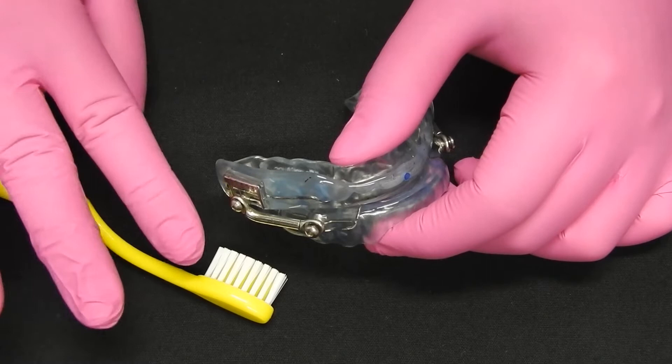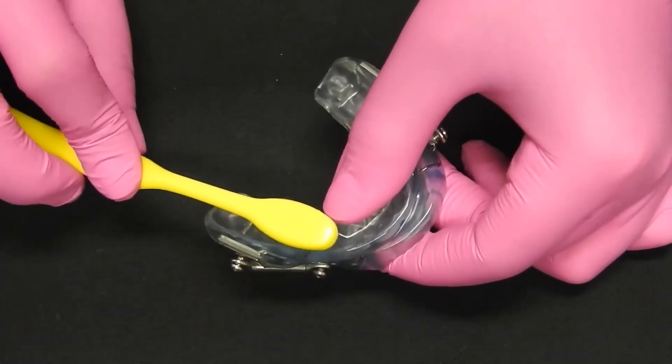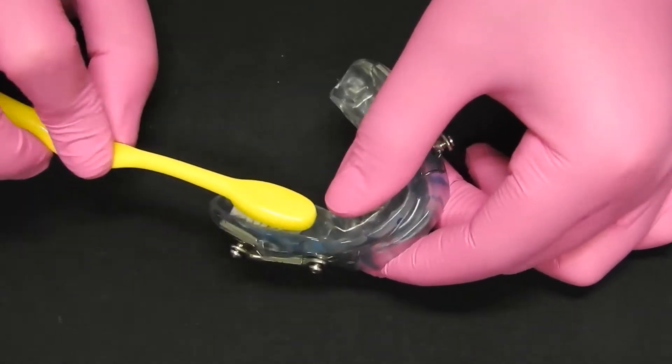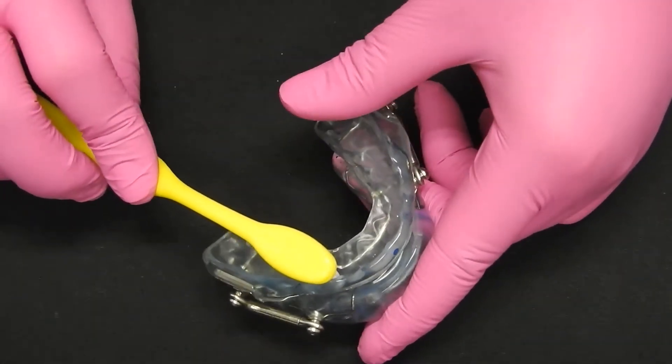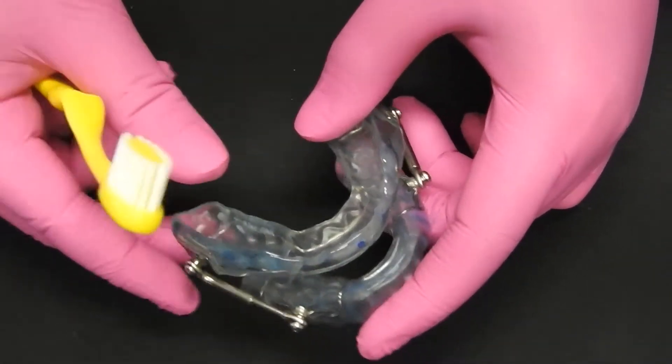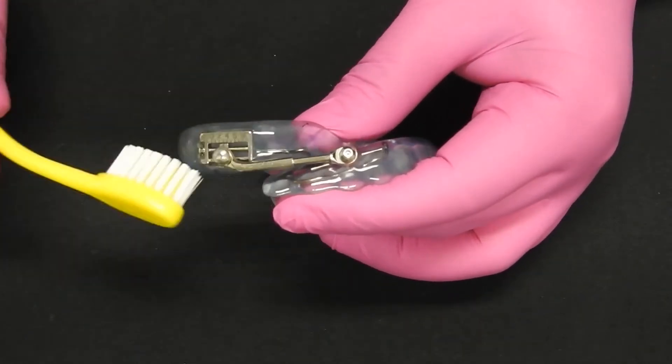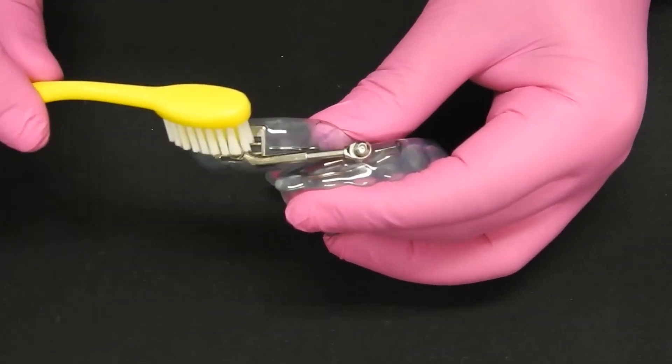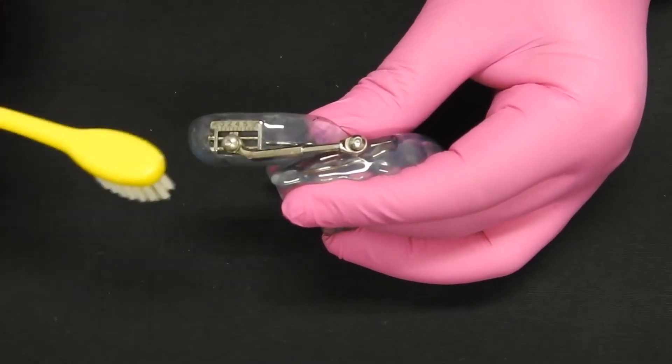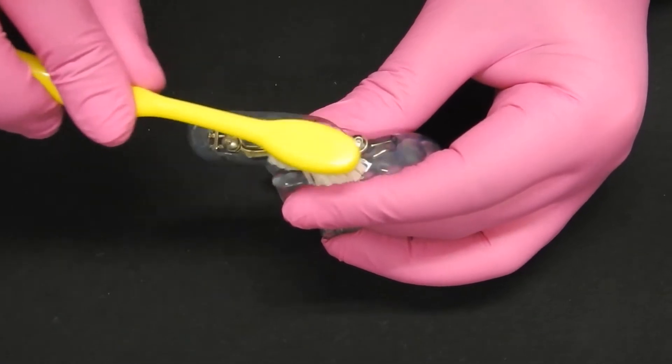You're going to take your toothbrush with your toothpaste or soap, scrub in contact where all the teeth are touched, and then also scrub the exposed screw. Get your toothbrush in there and clean the metal as well.